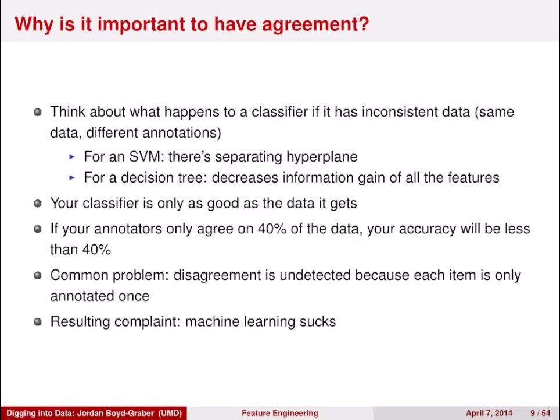If your annotators only agree on 40% of the data, then the accuracy of your classifier will be less than 40%. This is a super common problem. What I've seen happen is someone trying to use machine learning for the first time collects annotated labels, annotates each item only once, doesn't compute agreement statistics, and the process just doesn't work. They end up blaming machine learning, but this is the standard garbage in, garbage out problem. If you don't have good input to your algorithm, the output is going to stink.